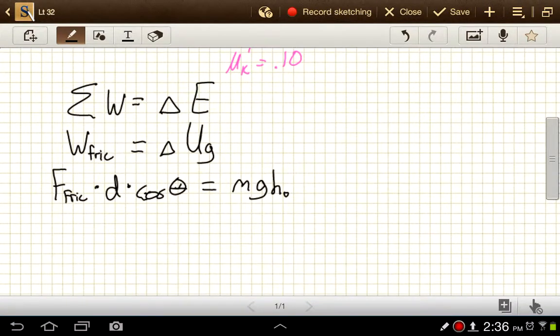And force from friction, we don't have a value there, but we can figure that out. That would be mu times the normal force, and then times the distance times the cosine of the angle between the frictional force and the displacement vector. It has to equal mass times gravity times initial height. I'm leaving this one just all as variables for now, and we'll see that in just a minute a lot of this stuff is going to cancel out.